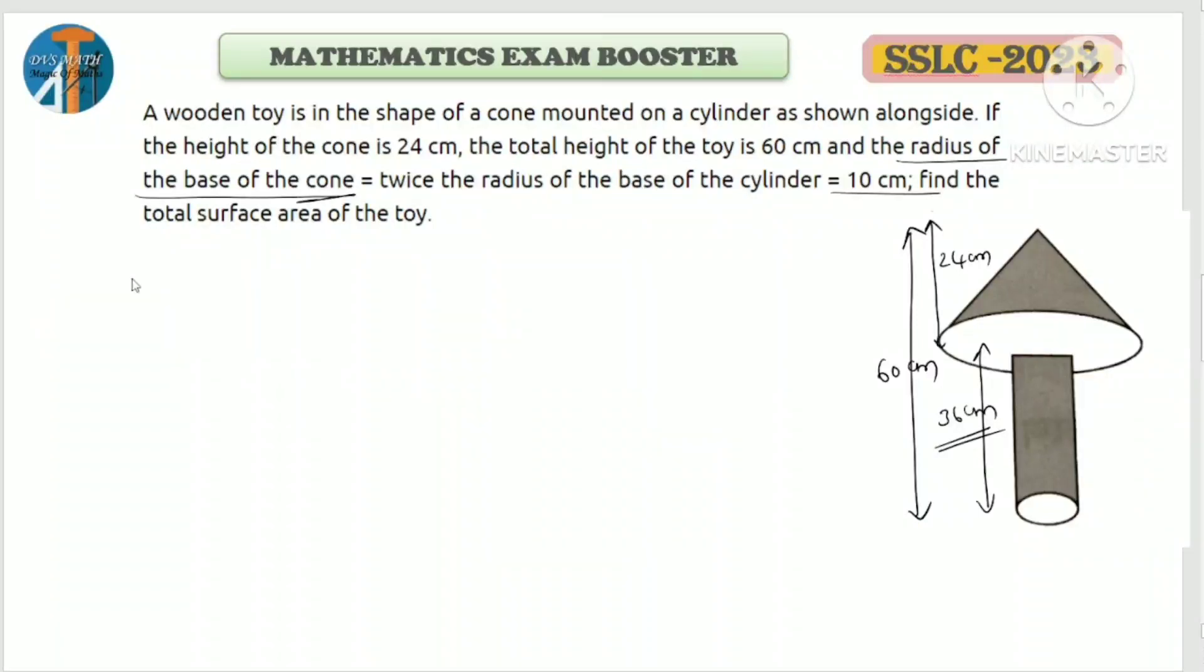First, the total height of the toy is 60 cm. If the height of cone is 24 cm, what will be the height of cylinder then? We have to remove 24 cm, so height of the cylinder will be 36 cm. Next, the radius of cone is 10 cm. Then what will be the radius of cylinder? Twice of cylinder will be the cone, so radius of cylinder is equal to 5 cm.